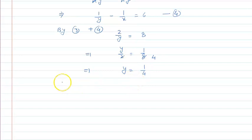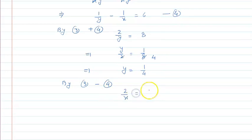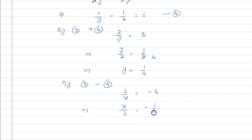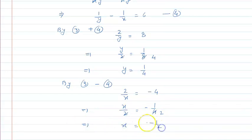Now we do equation 3 minus equation 4. The y terms cancel and the x terms add, giving 2 upon x equals 2 minus 6, that means minus 4. Taking the inverse, x upon 2 is equal to minus 1 upon 4, which cancels 2 times, so x is equal to minus 1 by 2.